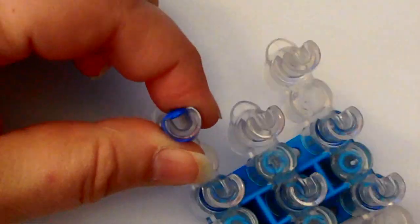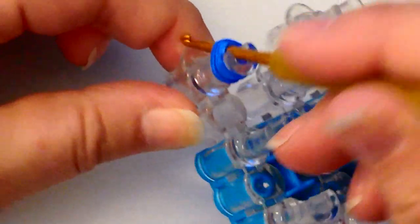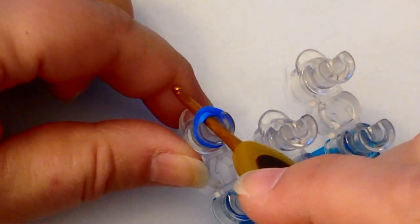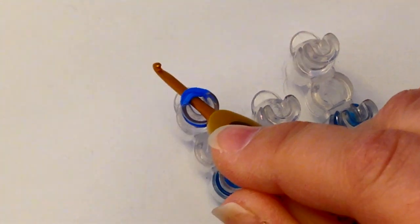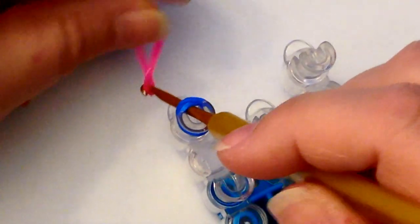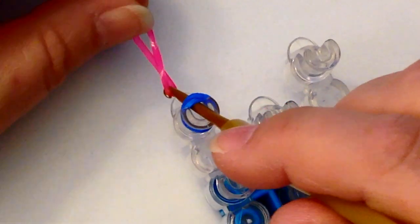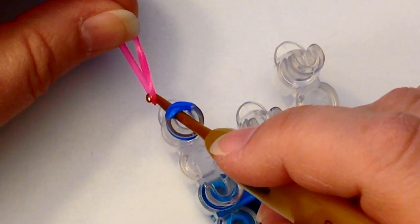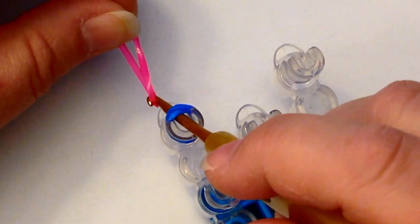Now push your hook through those loops. We're using the space, the gap of our peg, to be able to get our hook through. My first band is going to be pink. We're going to make a magic ring with five, well we can do six bands. Different patterns require different numbers of bands in the magic ring.